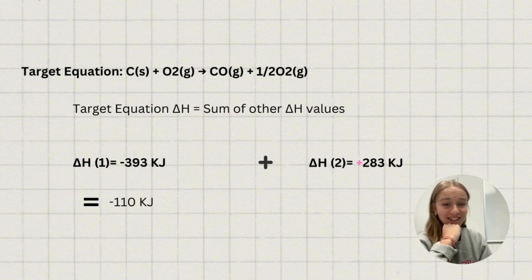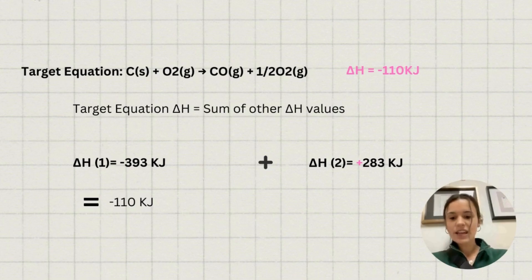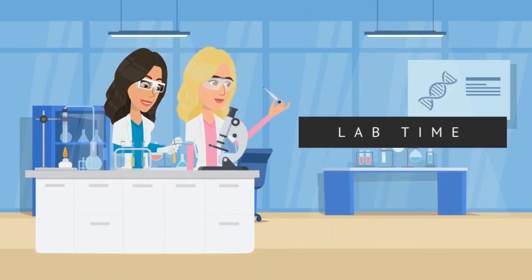There you have it folks, the delta H value of our target equation is negative 110 kilojoules. Now that we know how to solve for delta H values of our target equations, let's perform a lab to apply our new understanding of this topic. Lab time!